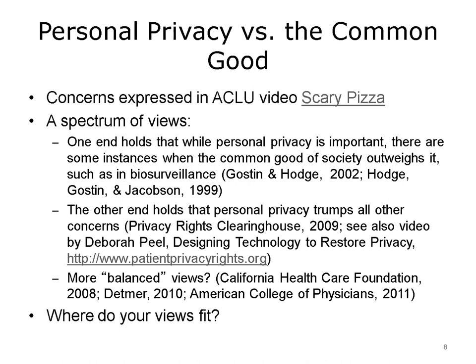There is a broad spectrum of views on personal privacy versus the common good, often reflecting underlying political beliefs. At one end of the spectrum is the view that although personal privacy is important, there are some instances when the common good of society outweighs personal privacy. Examples include biosurveillance — whether monitoring emerging natural diseases or bioterrorism — where early intervention is possible with more information, and clinical research, where more research increases the ability to provide quality health care. The other end of the spectrum holds that personal privacy trumps everything, with no reason to violate privacy without explicit consent. Others have called for a more balanced approach.